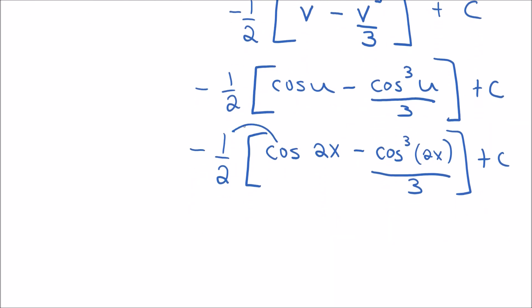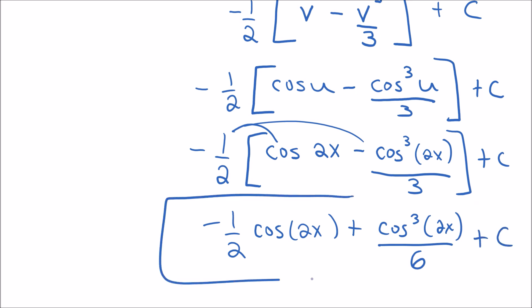And then of course, we can multiply this through and get negative 1 half cosine of 2x. And then plus, and this would be cosine cubed 2x over 6 plus c. And there would be your answer.